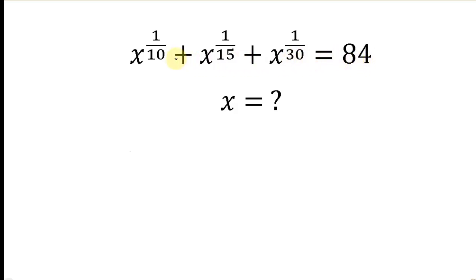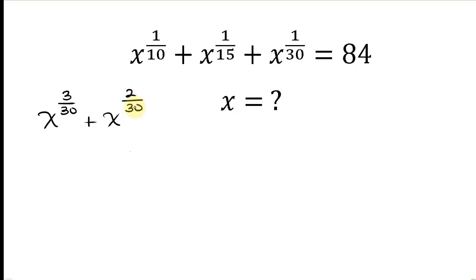Our first step will be to simplify each of the exponents by making their denominators 30, because between 10, 15, and 30, the LCM is 30. So x to the 1 over 10 is the same as x to the 3 over 30, plus x to the 1 over 15 is the same as x to the 2 over 30, plus x to the 1 over 30, and this is equal to 84.